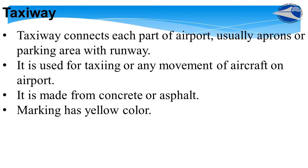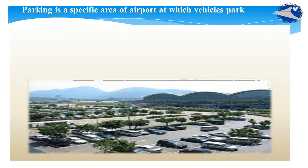The taxiway connects each part of the airport — usually aprons or parking areas with the runway. It is used for taxiing or any movement of an aircraft on the airport, and is made from concrete or asphalt. Taxiway markings are yellow in color. Parking is the specific area of the airport at which vehicles park.